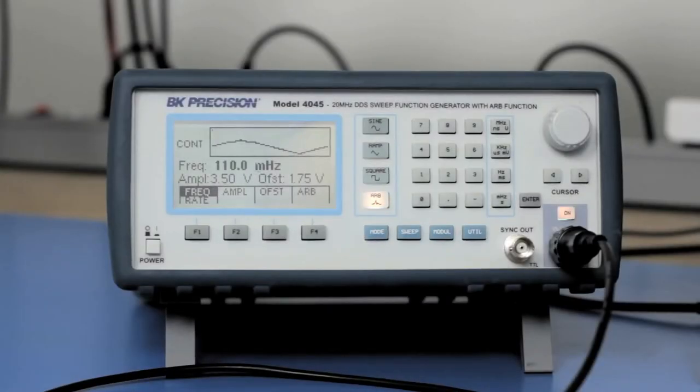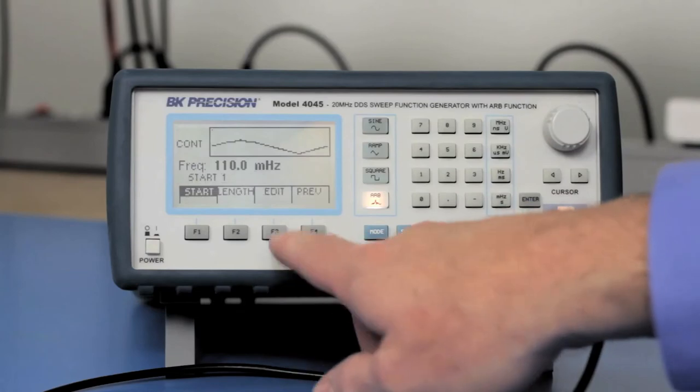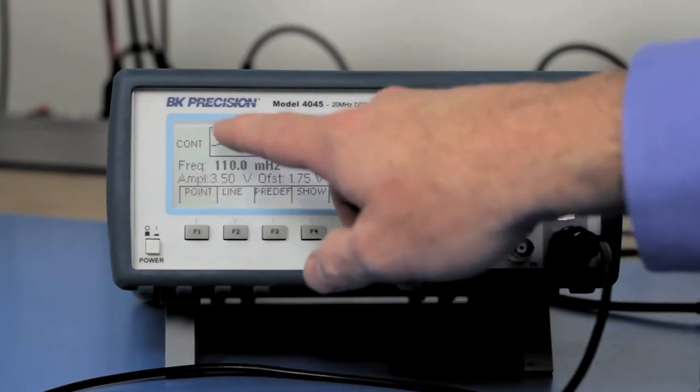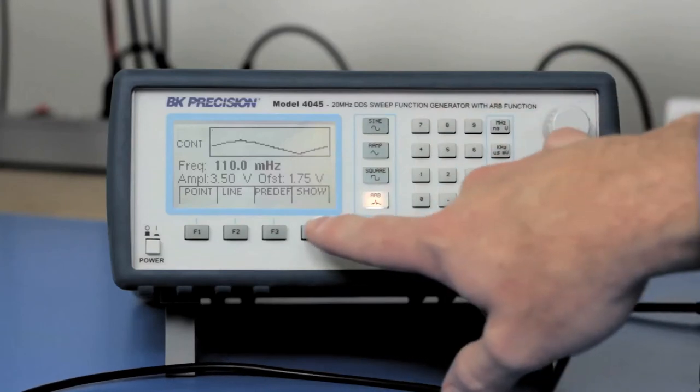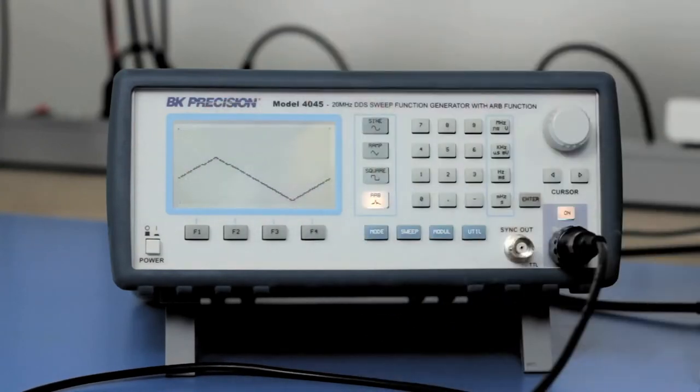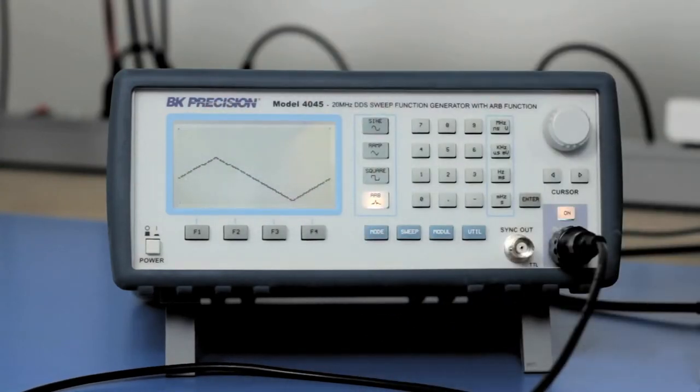So to generate the waveform that we're going to use to simulate the signal that the 5492B is measuring, I'm going to use this 4045 arbitrary function generator. And to generate this signal, what I've done is I've gone into the ARB menu and clicked Edit, and I went in and added a point that is like an outlier. It's a ramp waveform. And there you'll see in this top little corner there's a little dot, which you might not be able to see here, but I'll show you on the oscilloscope what it's outputting.